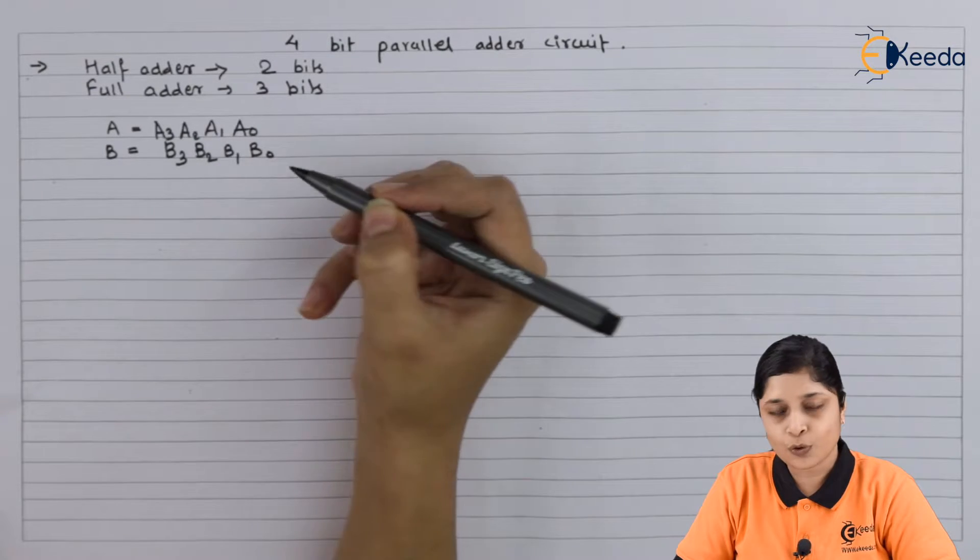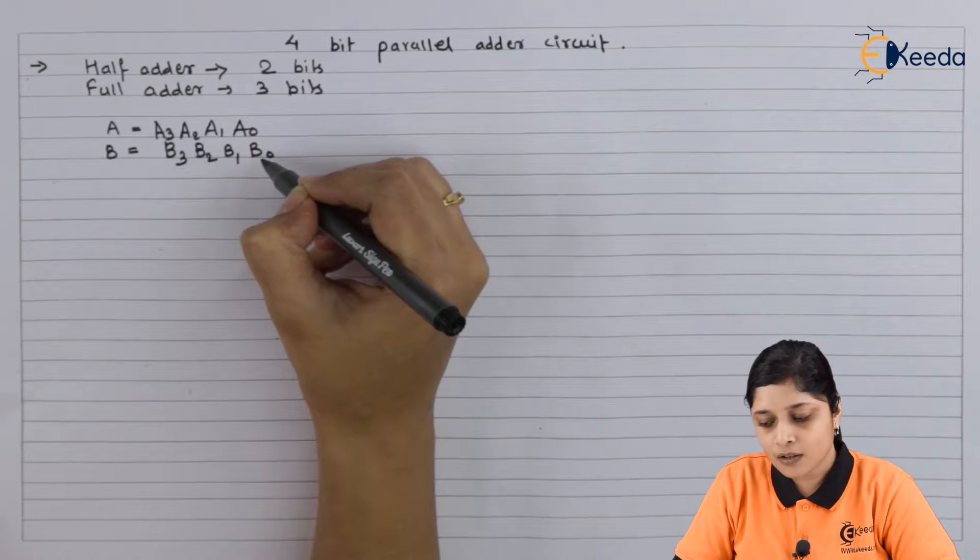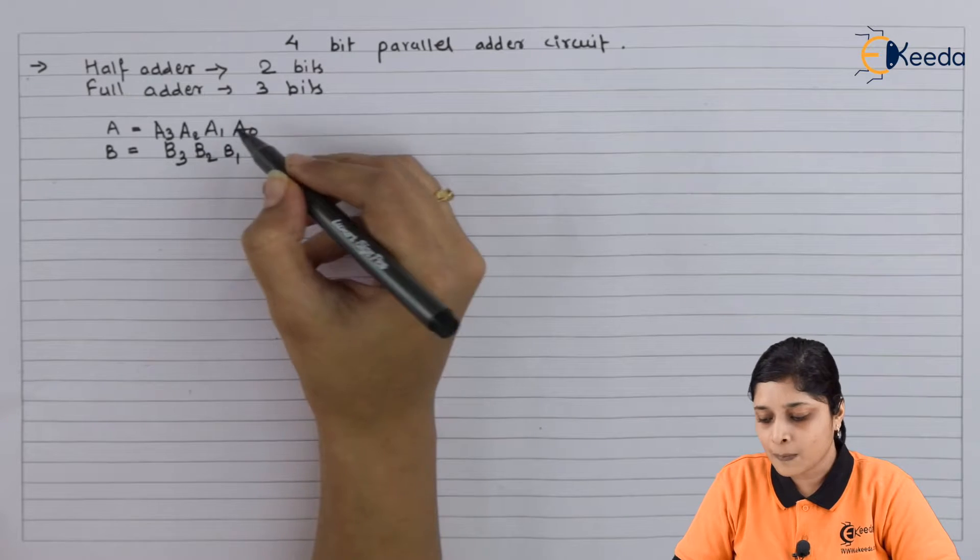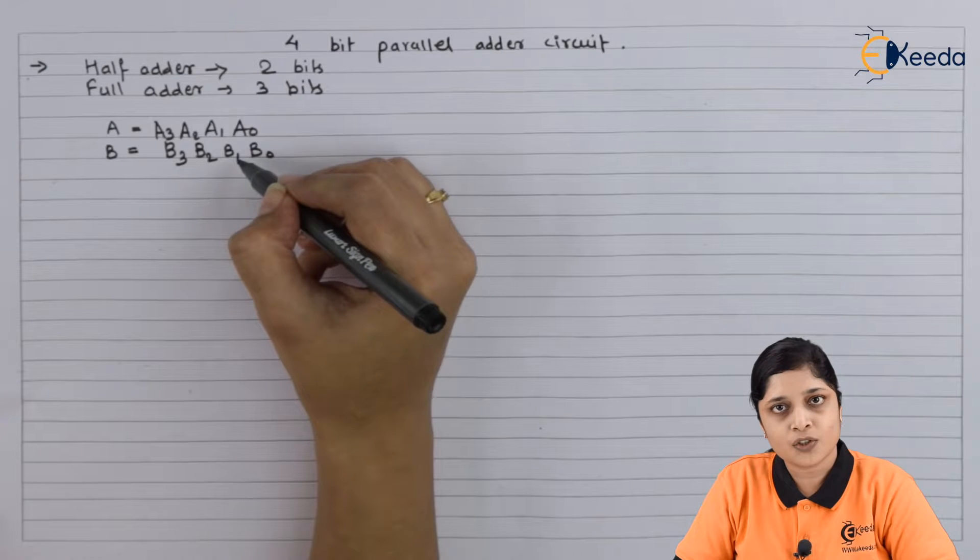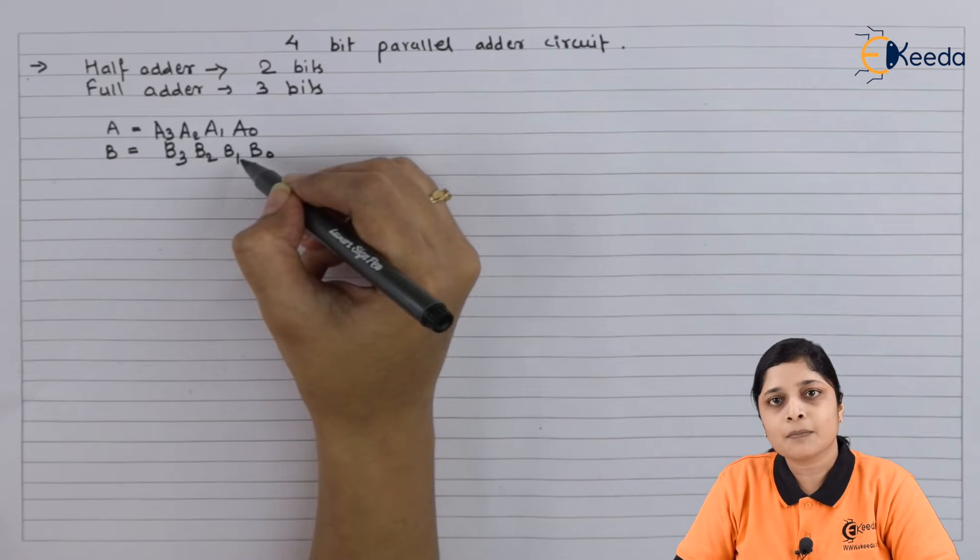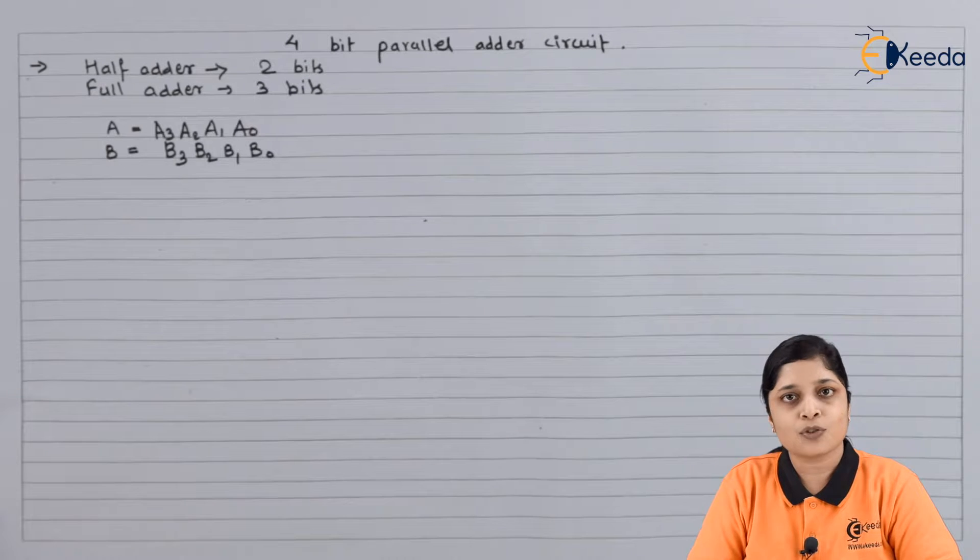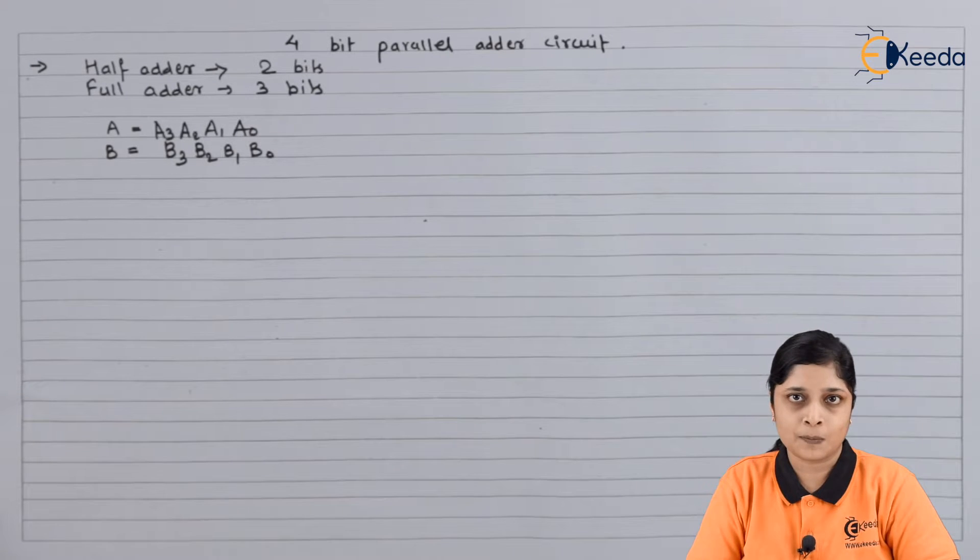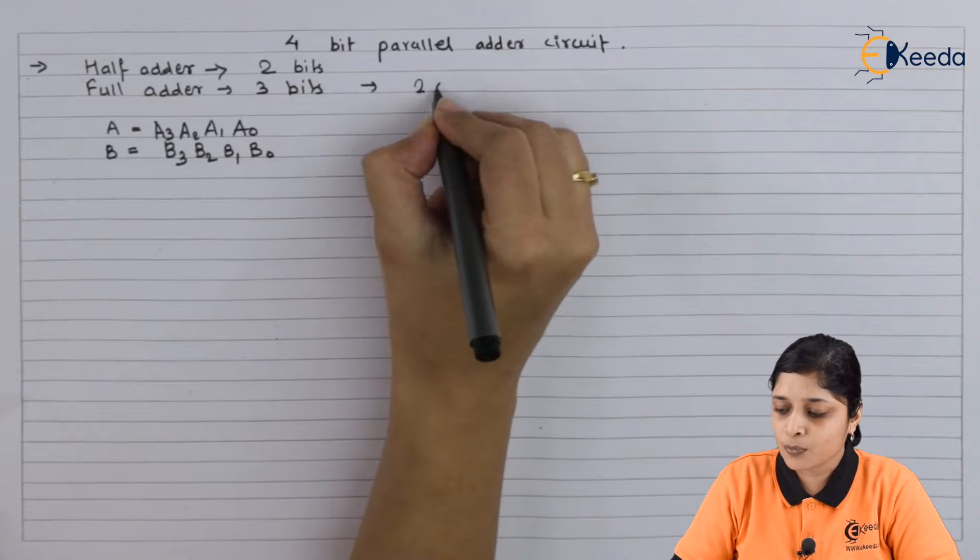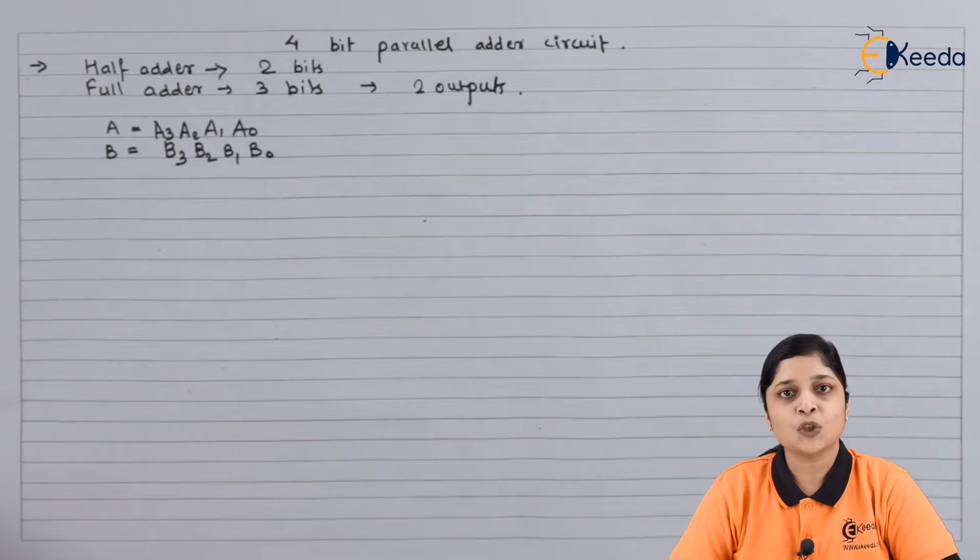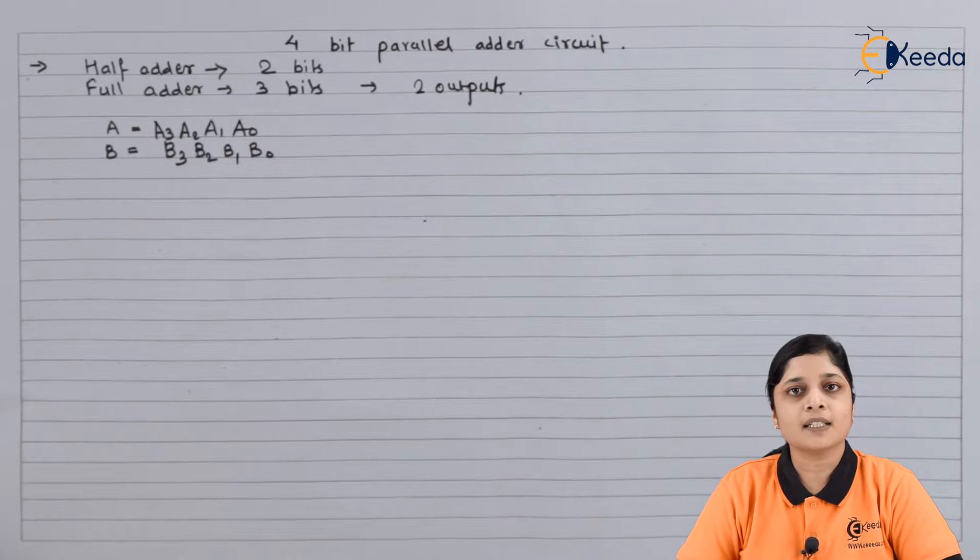You have to add each bit, so two inputs we have to consider: B0 and A0, so for that one full adder we will use. Again for second addition, again full adder circuit is used. Now why full adder? Because the concept of carry comes, so we want extra bit also.